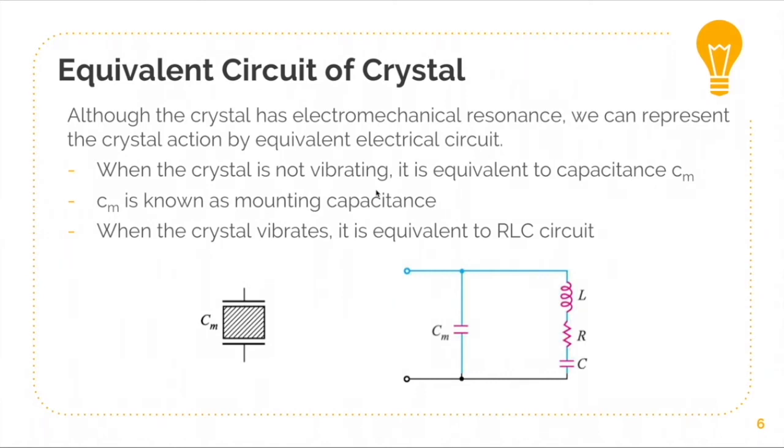When we apply AC voltage through the metal plates and the crystal oscillator will start to vibrate, we can approximate its operation through a series R, L, C branch connected in parallel with the mounting capacitance.